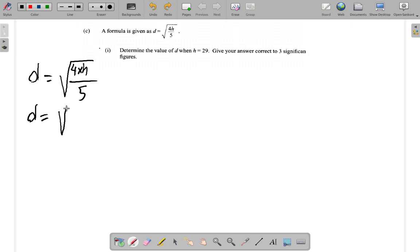D is equal to square root of 4 times H, but they say H is 29. So you have 4 times 29. Make sure the square root sign covers all of it, divided by 5.